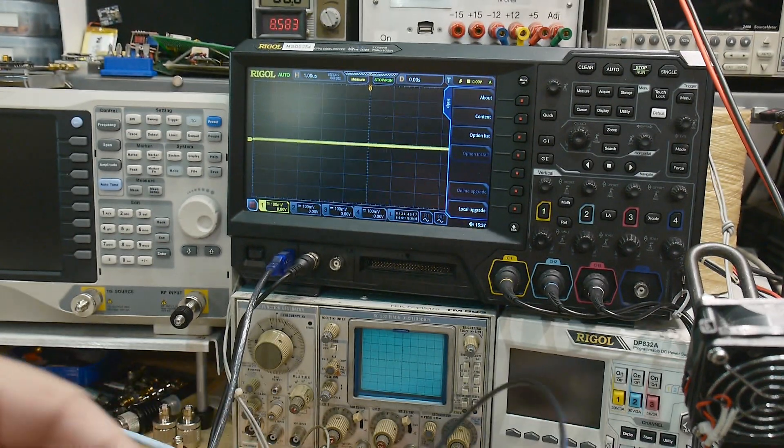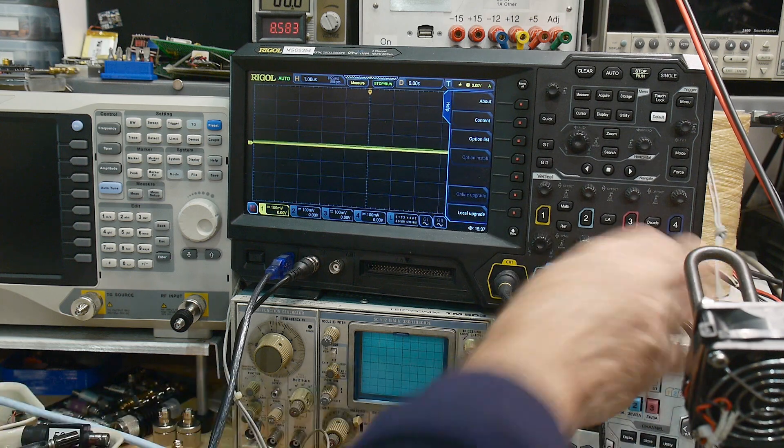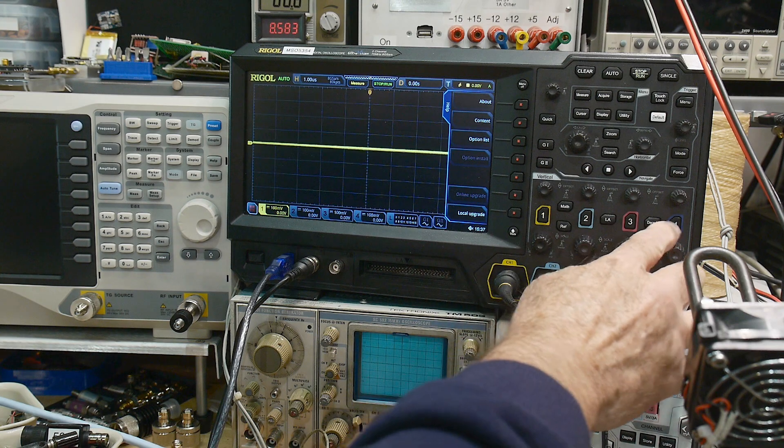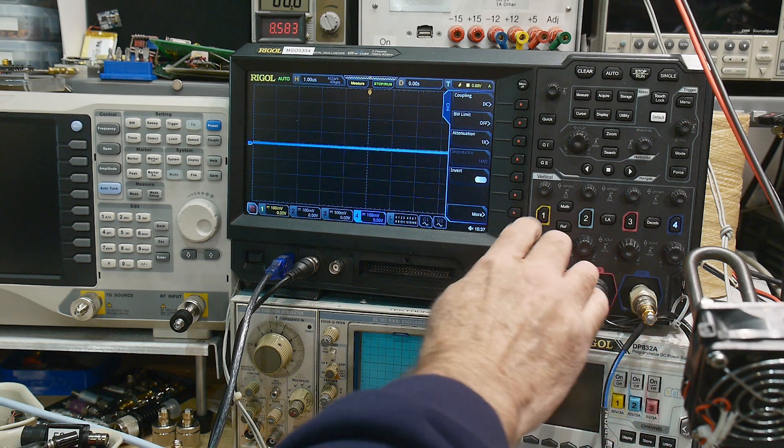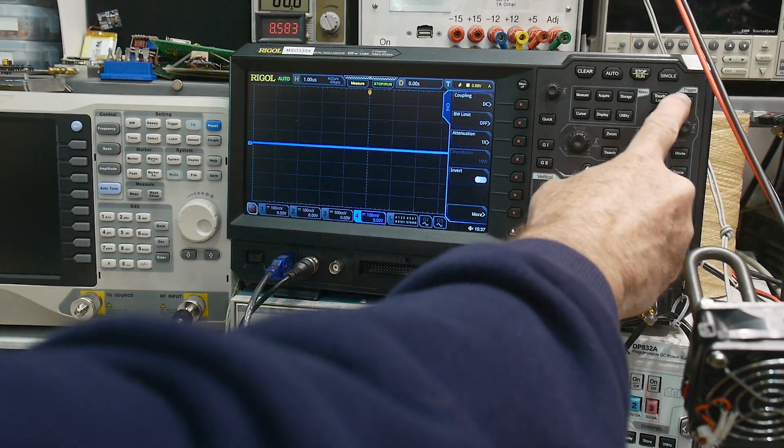We are going to hook it up to channel 4. I always leave channel 4 open. I put three probes on channels 1, 2, and 3 and leave 4 open for things like this. So we can enable that channel and we will turn off everything else and we will set our triggering to channel 4. Now we're all set to go.